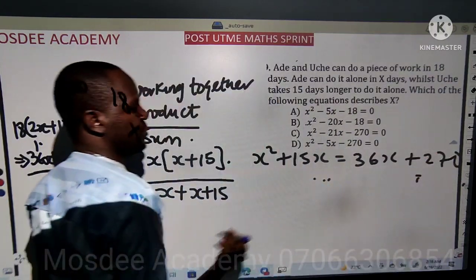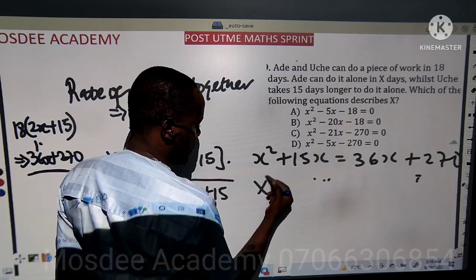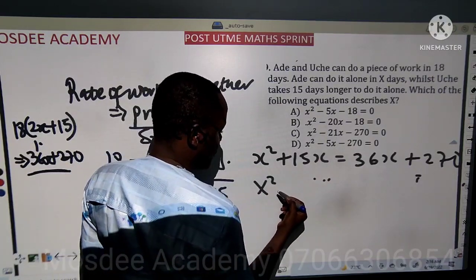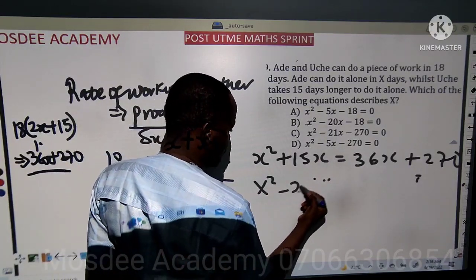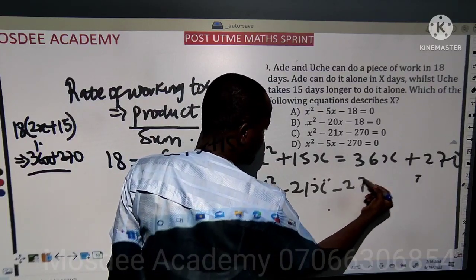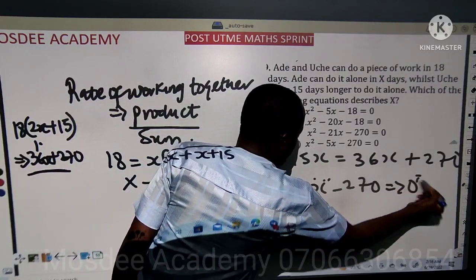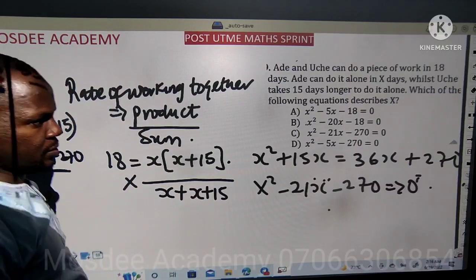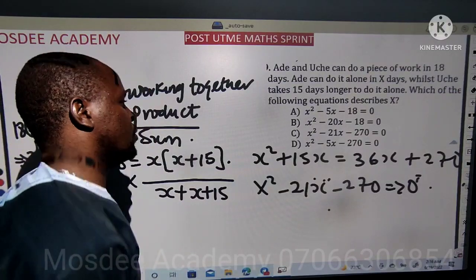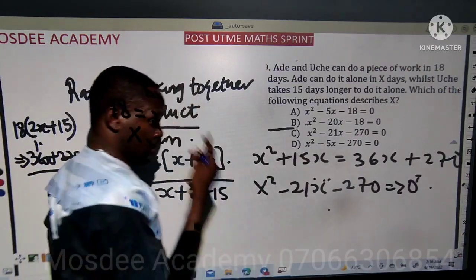So when you simplify this, it becomes x squared minus 21x minus 270 equals 0, since 15 minus 36 is negative 21. So something like this should be the option — Option C. So Option C is correct.